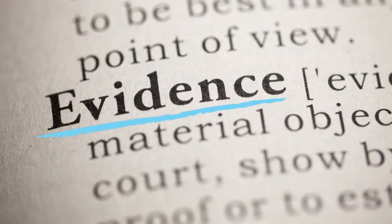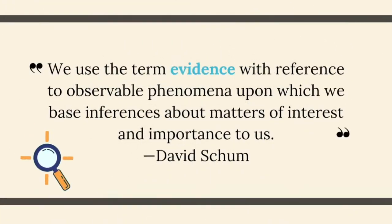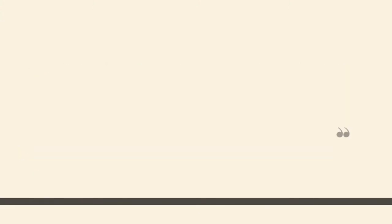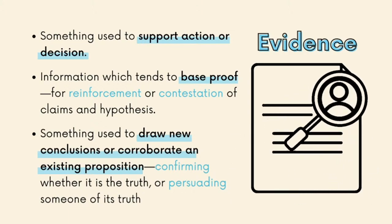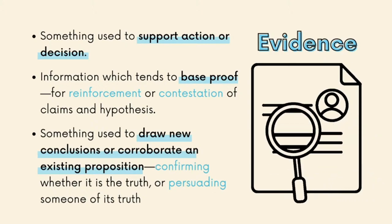As the State Records Authority of New South Wales in Australia stated, records are more than dates, facts, or information — they are evidence. Records provide evidence, or evidence can be obtained by using them. But what is evidence? According to David Shroom, we use the term evidence with reference to observable phenomena upon which we base inferences about matters of interest and importance to us. In other words, evidence is something used to support action or a decision. It is information that reinforces or contests claims and hypotheses — something that confirms whether it is the truth or is used as a tool to persuade someone of its truth. Evidence is something that can help us decide and prove whether something is true or false. When we have a record of something, we have additional grounds or other kinds of evidence for the same belief, and we can plausibly see the record as one kind of evidence, perhaps one that is particularly significant.